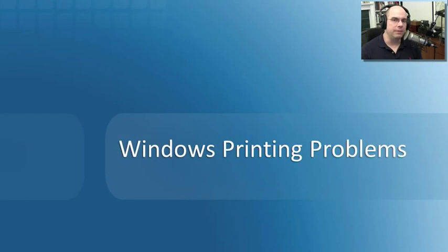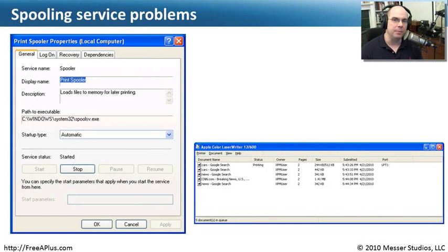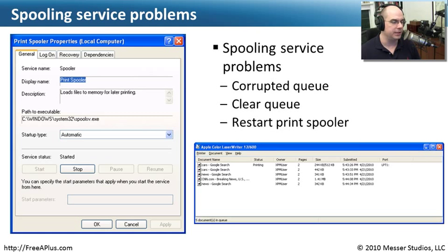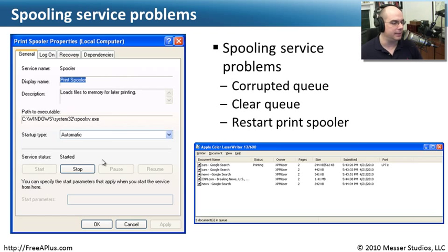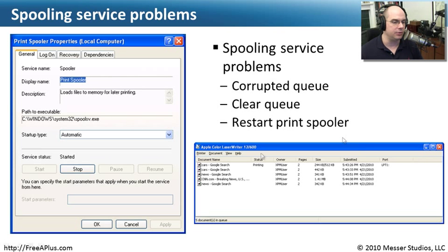There are a number of printer problems that always seem to crop up — very common issues. The spooling service is one of those. If you go into the services on your computer, you'll be able to see the spooler and know if it's started or not. Sometimes restarting that spooler is all you really need to get things going. You stop the spooler and start it again to free things up.